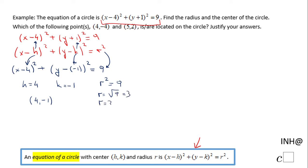So we have now the center and the radius of this circle. Now we have to identify if these two points are on this circle and I'm going to use an algebraic method. I'm going to take each point, 4 and negative 4 first, and I'm going to plug it in.